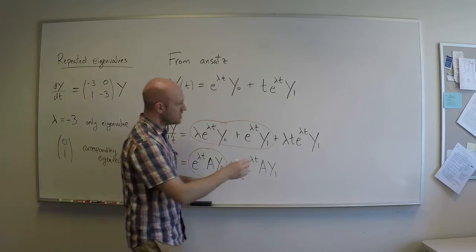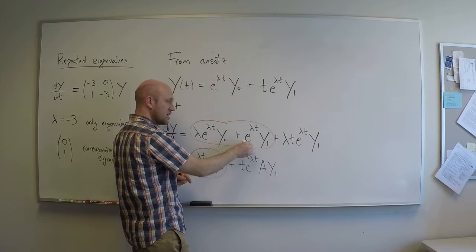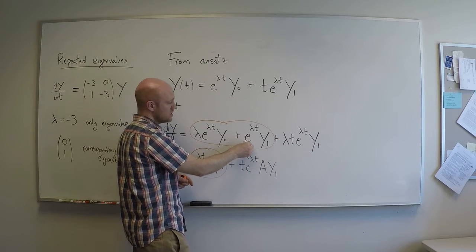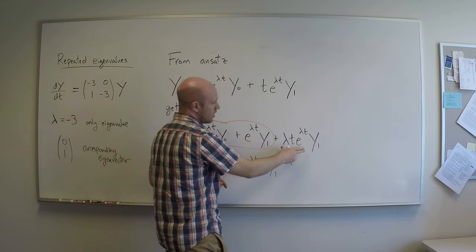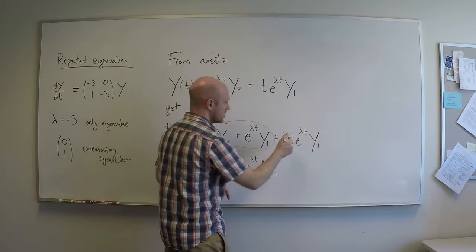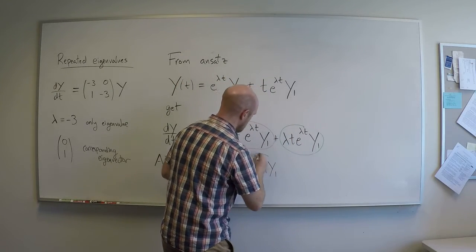Similarly, I have a t*e^(λt). That's a function which is independent of e^(λt). It's linearly independent from it. So I must have this part be equal to this part.